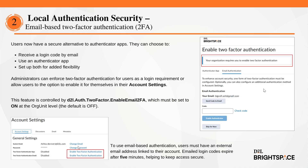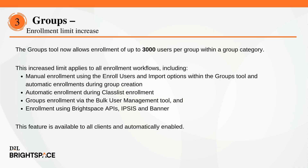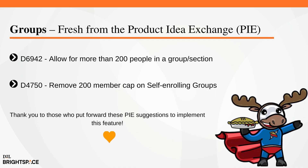The Groups tool now allows enrollment of up to 3,000 users per group within a group category. This increased limit applies to all enrollment workflows, including: manual enrollment using the enroll users and import options using the Groups tool; automatic enrollments during group creation; automatic enrollment during class list enrollment; Groups enrollment via the Bulk User Management tool; and enrollment using Brightspace APIs, IPSIS, and Banner. This feature is available to all clients and automatically enabled.